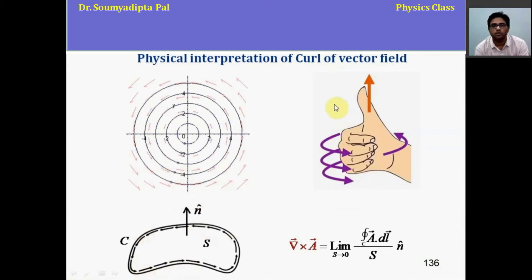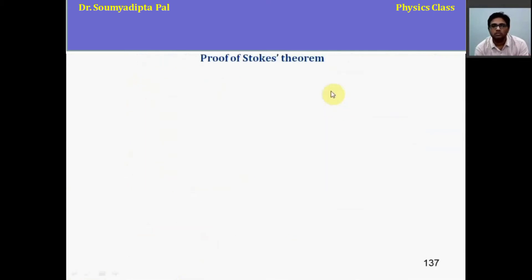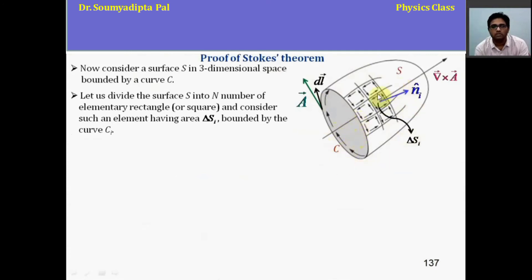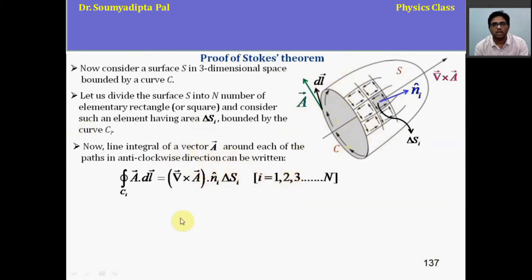Next, we have to prove the Stokes theorem. So, to do that, let's consider a surface S like this. And it is bounded by the curve C. Then, let's divide the surface S into n numbers of elementary rectangle or square. And let's say area of such an element is del Si. Here, i represents the ith element. And the boundary curve is Ci. Then the line integral of the vector a around each of the paths in anticlockwise direction can be written as closed line integral A around Ci curve is equal to curl of A dot ni del Si. Here, ni is the unit normal on del Si surface.